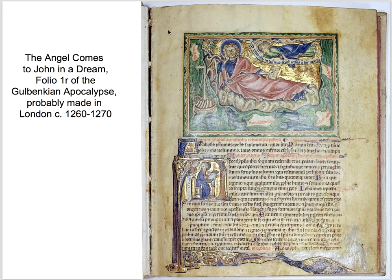On the first page of the Gulbenkian Apocalypse, we see a half-page miniature at the top, along with a large historiated initial showing an angel talking to John — the author of the Apocalypse or Book of Revelation — telling him what to write in Scripture. Then we have an elaborate pen flourish or marginal decoration involving a lot of gold, and a peacock at the end.